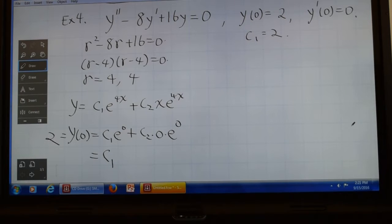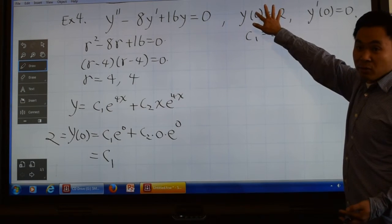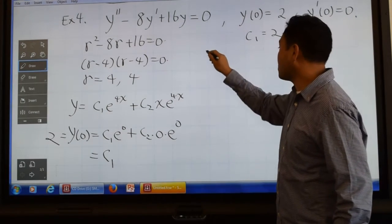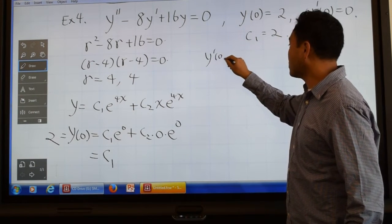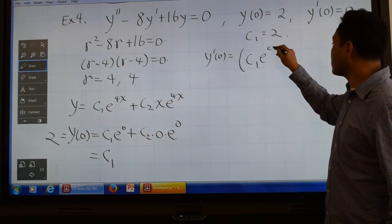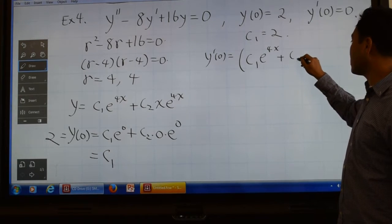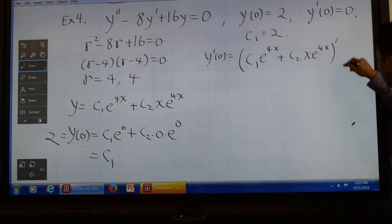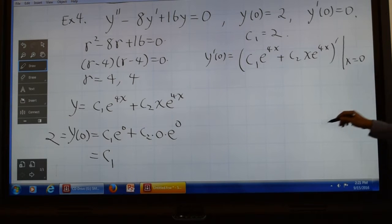But just having c1 equal to 2 will only satisfy the first condition. We still need to make sure that it satisfies the second condition, so you have to differentiate and plug in 0. You have c1 e to the 4x plus c2 times x e to the 4x prime, and then you plug in 0.